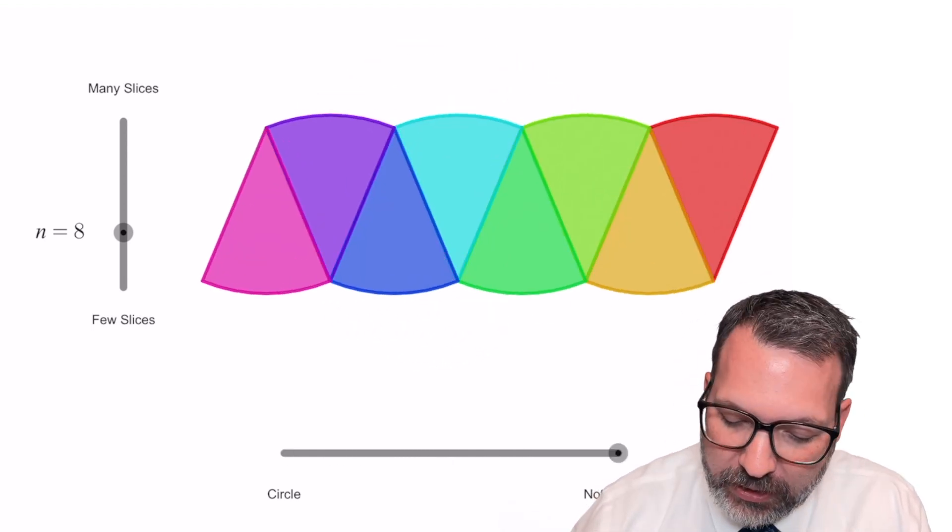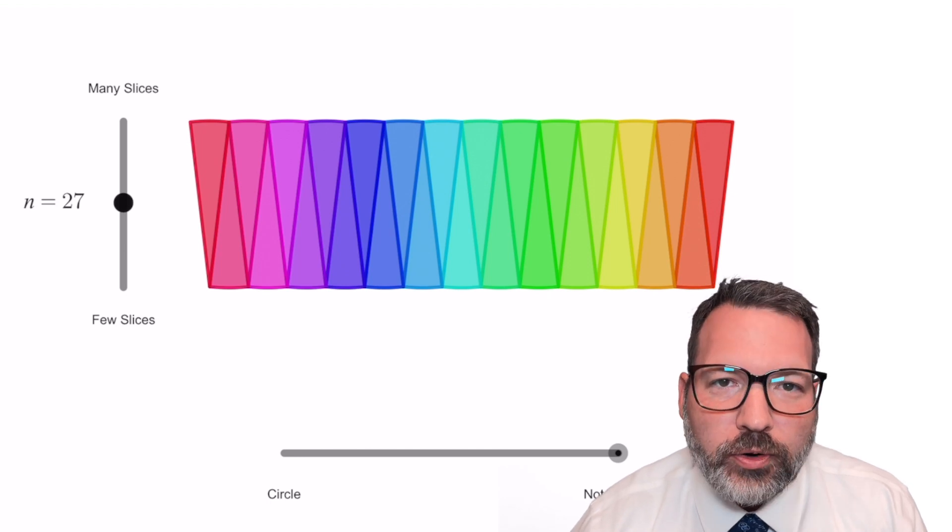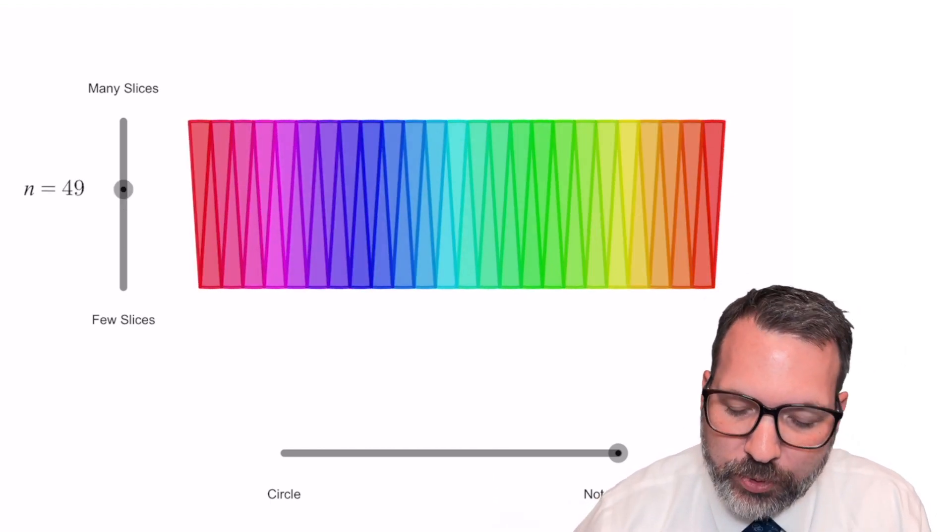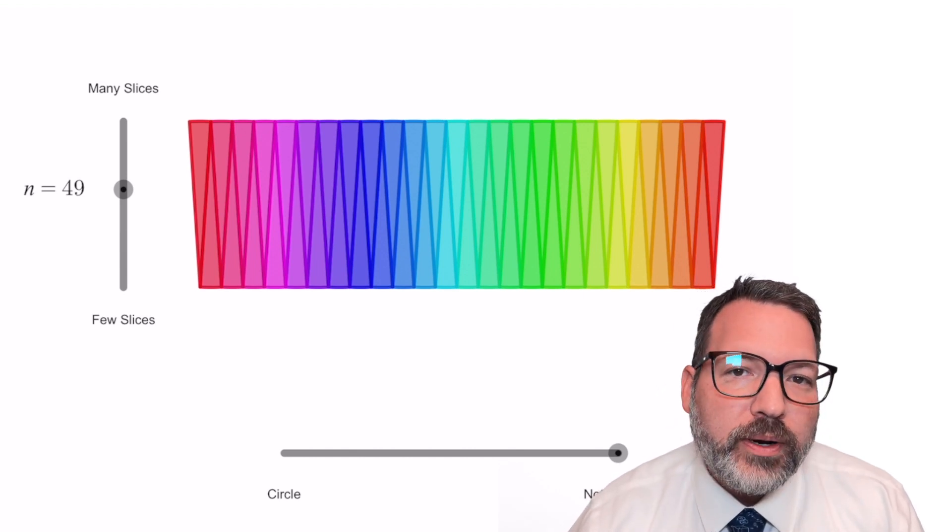Then one option we have is let's just massively increase the number of slices of this circle. You can see that as we increase the number of slices, this shape, which was a parallelogram, gets more and more rectangular.